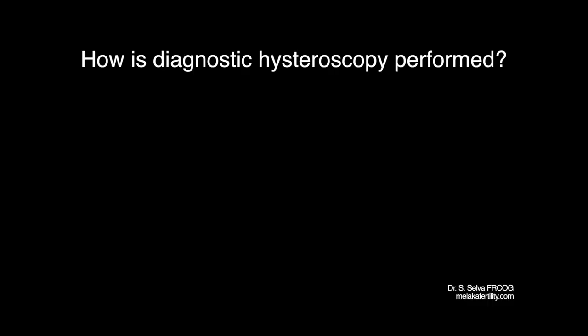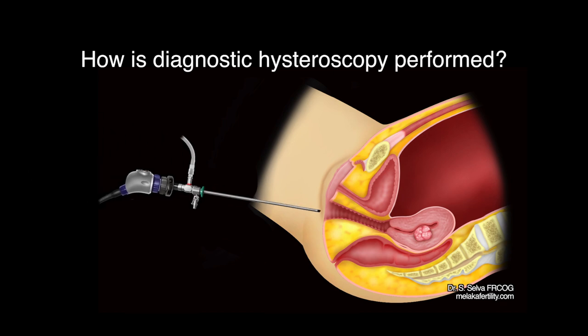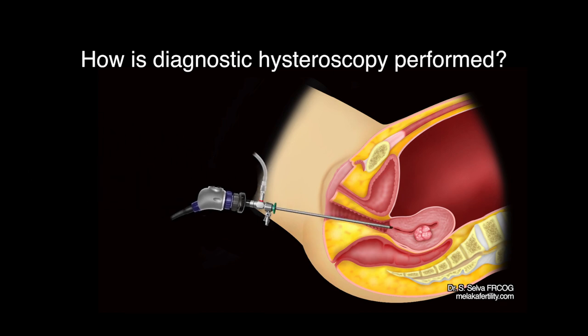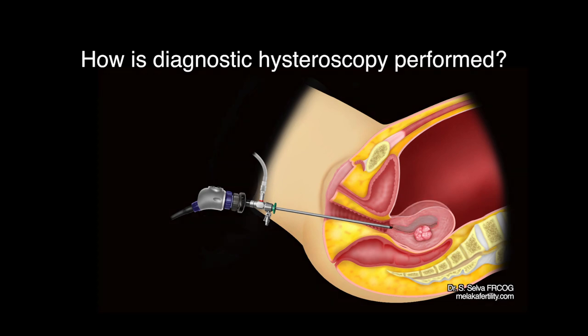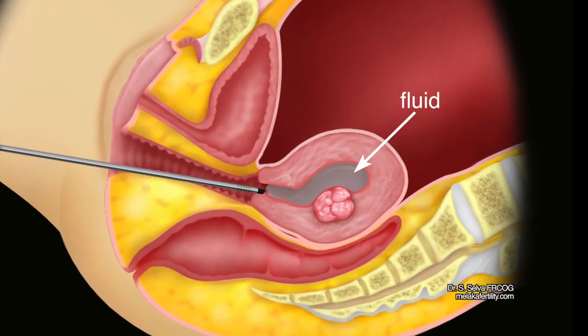How is diagnostic hysteroscopy performed? A diagnostic hysteroscopy performed without any anesthesia as an outpatient procedure is sometimes called an office hysteroscopy. A fine telescope attached to a camera is inserted into the uterine cavity via the cervix. In order to have space to visualize the uterine cavity, fluid or gas is used to distend the endometrial cavity. The fluid commonly used is called saline.